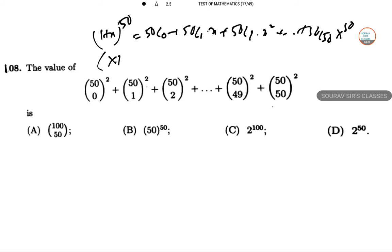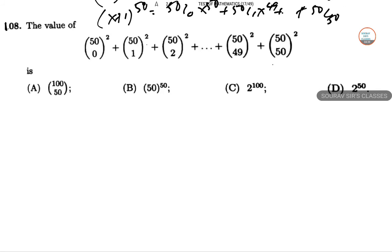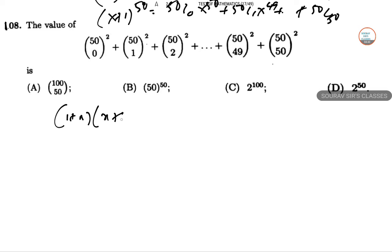Writing in reverse, (x+1) to the power 50 gives 50C0 times x⁵⁰ plus 50C1 times x⁴⁹ and so on. If we take the product of these two expressions, we get (1+x) to the power 100.